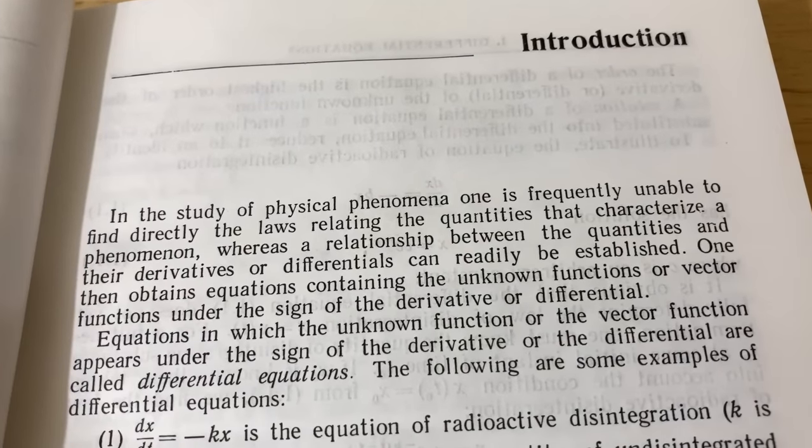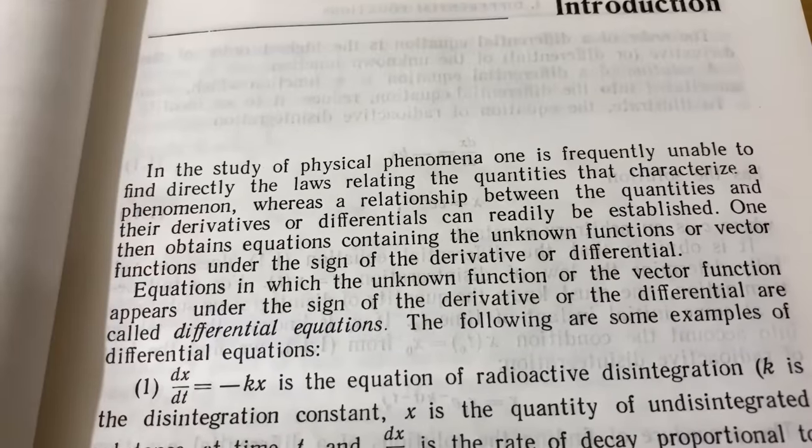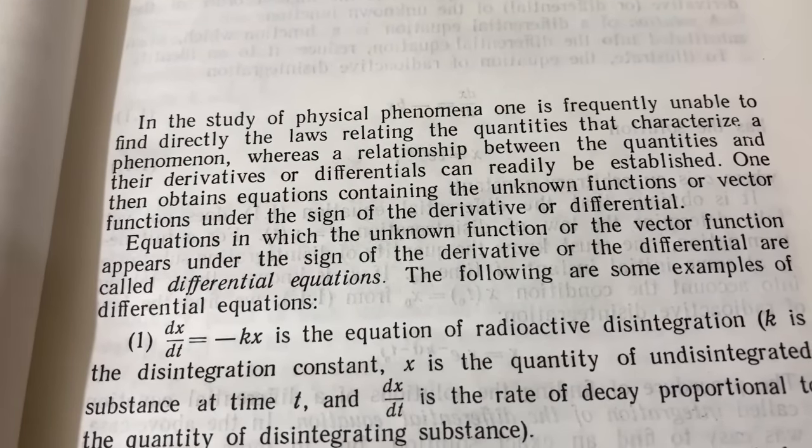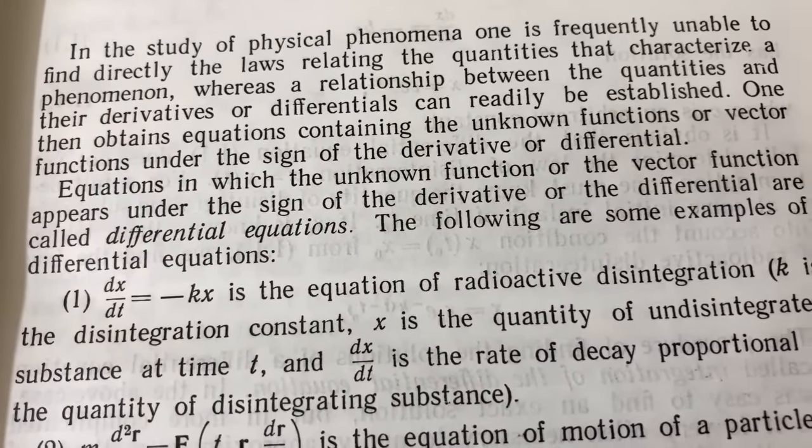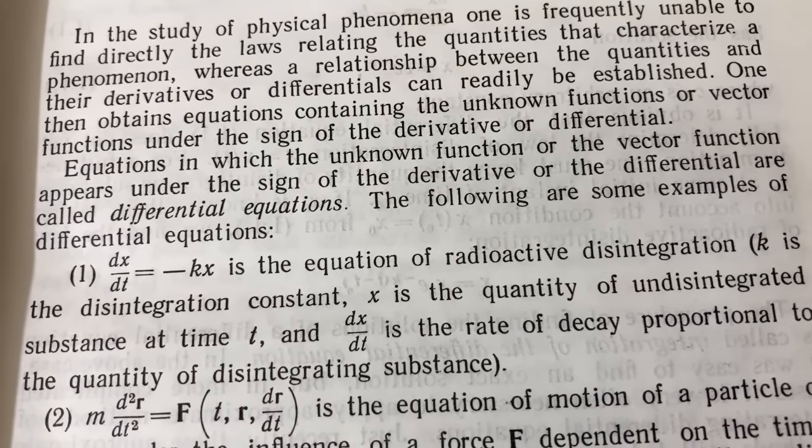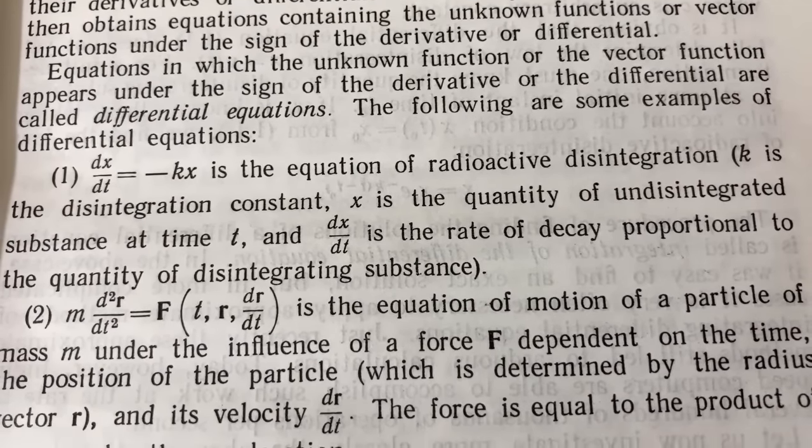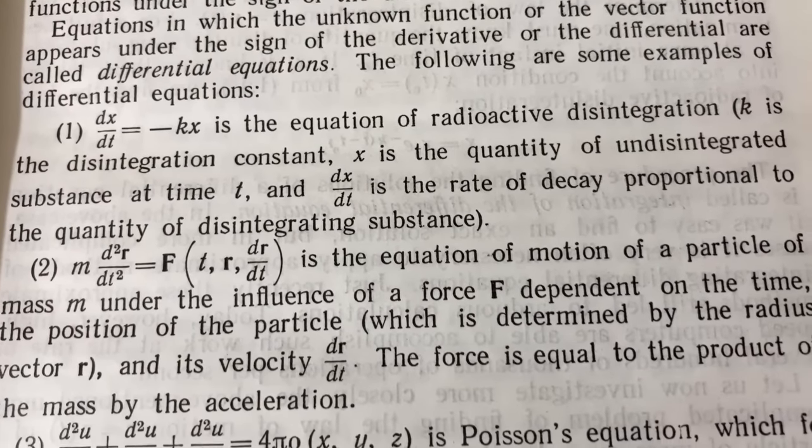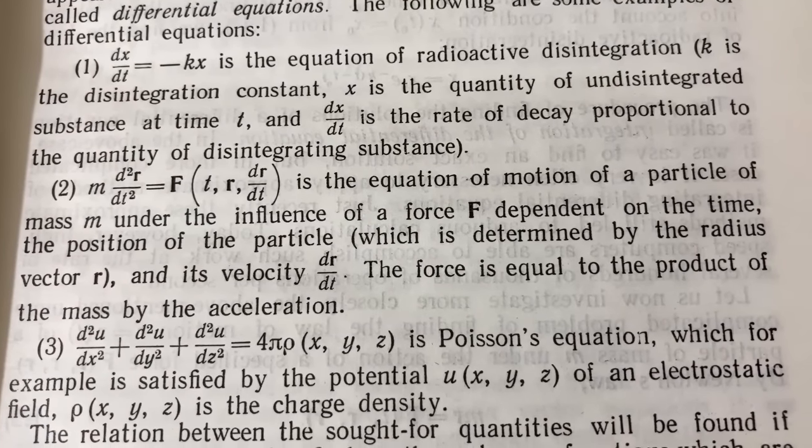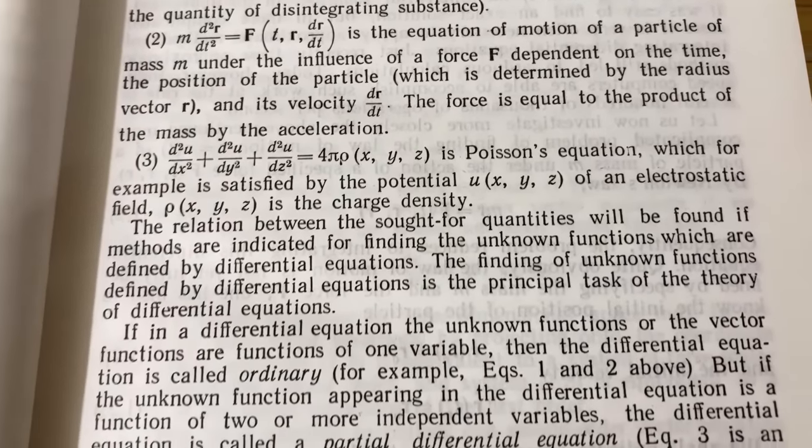Here it talks a little bit about the motivation for differential equations. Basically it says that oftentimes it's difficult to find formulas that can explain some physical phenomena directly without actually using derivatives. Equations in which the unknown function or the vector function appear under the sign of the derivative or the differential are called differential equations. Then they give you some examples. For example, this one is the equation of radioactive disintegration. Here you have the equation of the motion of a particle of mass m under the influence of a force f dependent on the time. And here you have Poisson's equation.